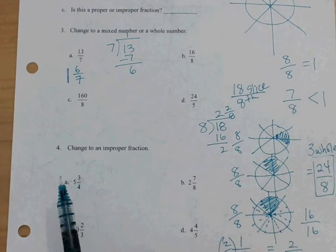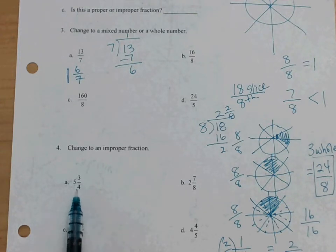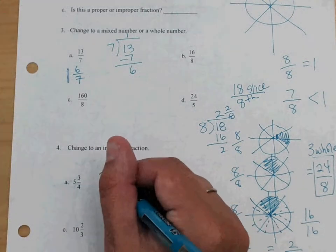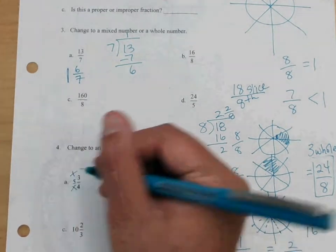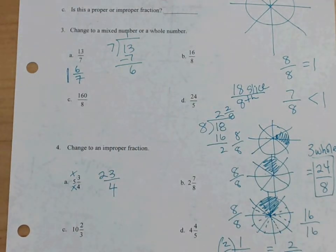Let's just try changing one mixed number into an improper fraction. Does anybody remember what we would do to make this into an improper fraction? Yep, which is 23 fourths. Five times four plus three. And that's why I wanted to give you the pizza example so you can actually see why it works like that.